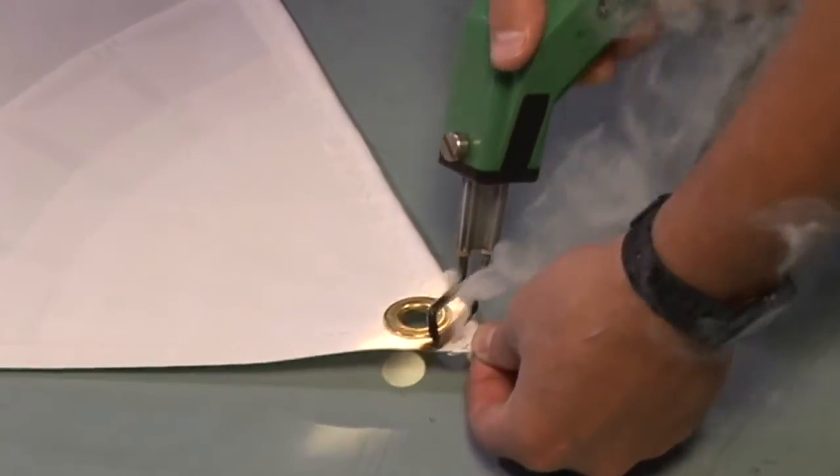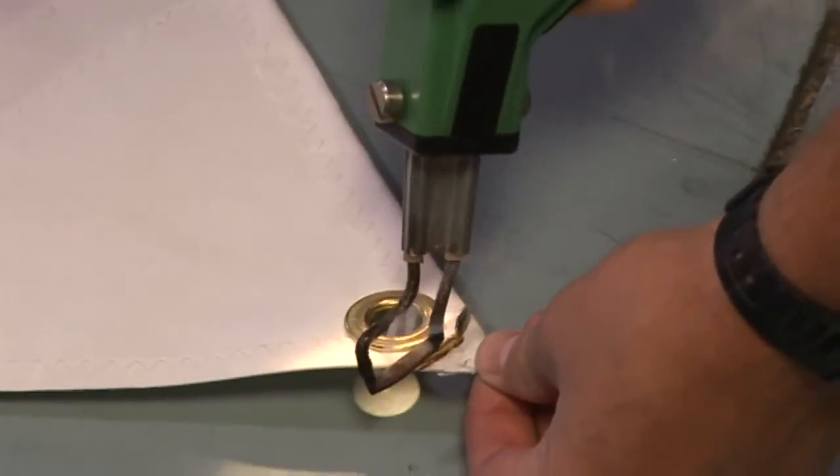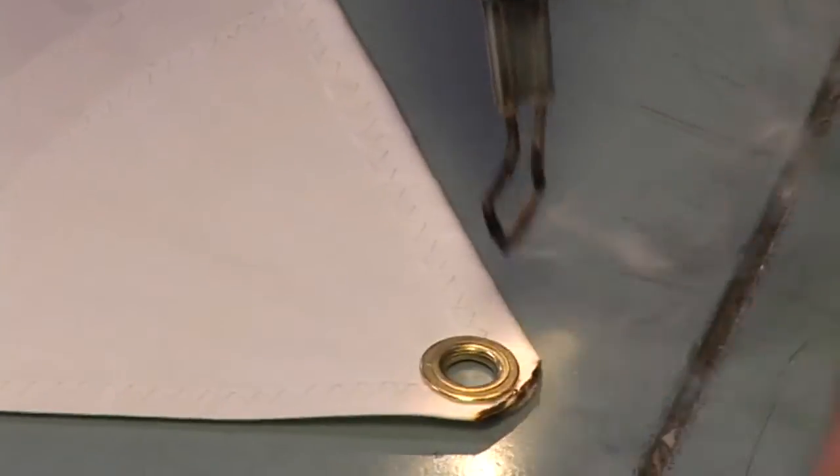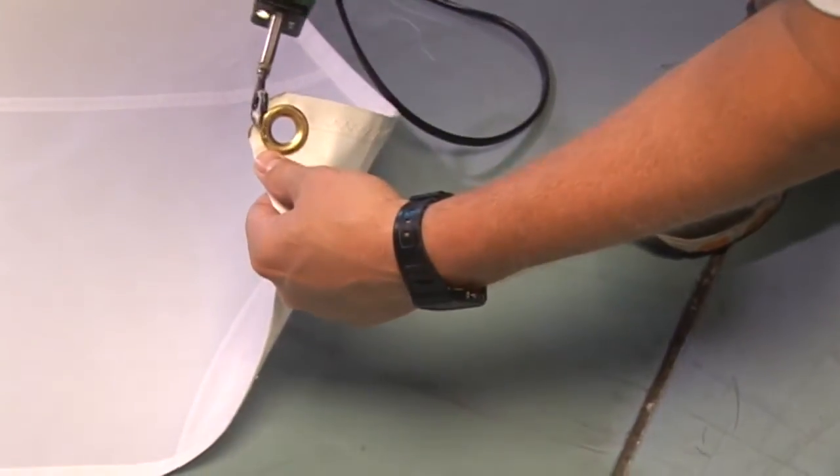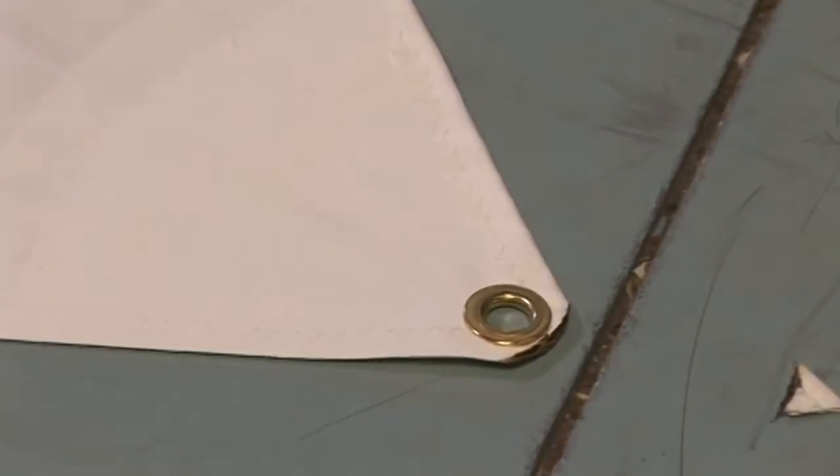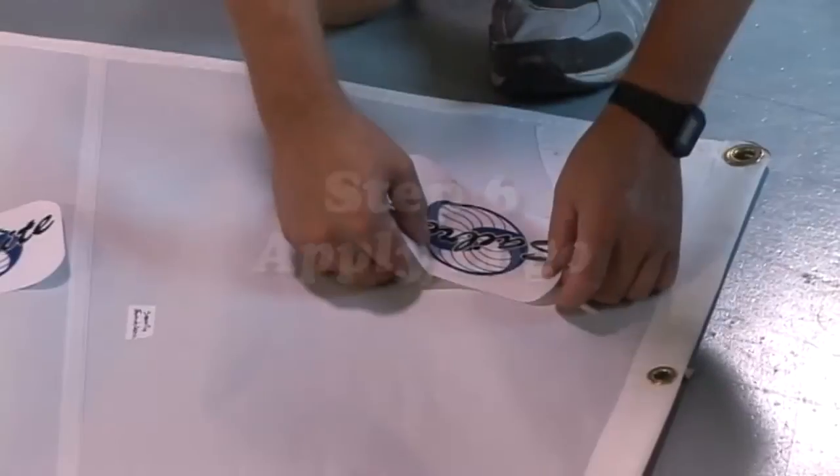Now the only thing left to do now is to take a hot knife and round those corners. Makes it a little bit nicer here. If you don't have a hot knife in lieu of this, you can use a wood burning tool or something like that. There we are. Now your sail's almost done. Do this to all four corners.